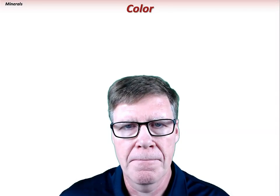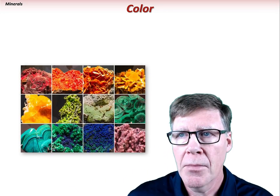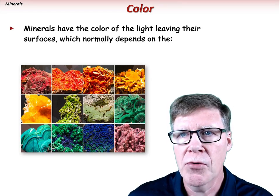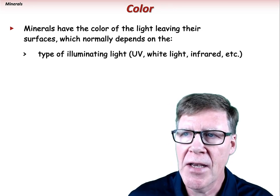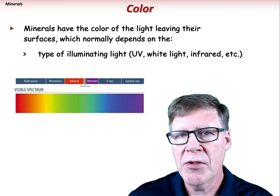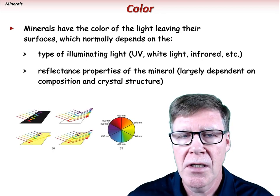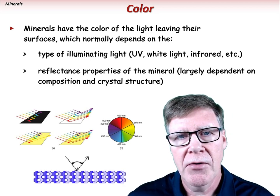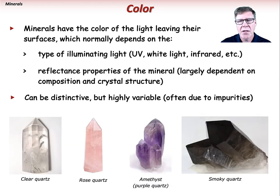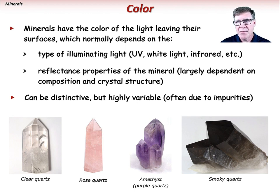The physical property of color is the light leaving the mineral's surface, which depends on the type of illuminating light and the reflectance properties of the mineral itself — largely dependent on composition and crystalline structure. Color can be very distinctive but can also be highly variable, usually due to small amounts of impurities within the mineral crystal. Quartz is notorious for having different colored forms — clear, rose, milky, amethyst, and smoky quartz — so color is easy to identify but not always a reliable diagnostic property.